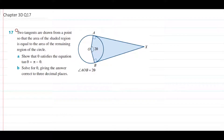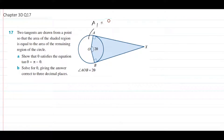Question 17: Two tangents are drawn from a point so that the area of the shaded region is equal to the area of the remaining region of the circle. What that means is this white area — the unshaded area — is equal to this shaded area, the blue area.